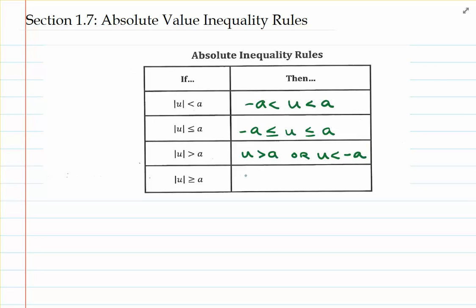In a very similar manner, the last absolute value inequality is going to split up as an OR in the following way: u is greater than or equal to a, or u is less than or equal to negative a.